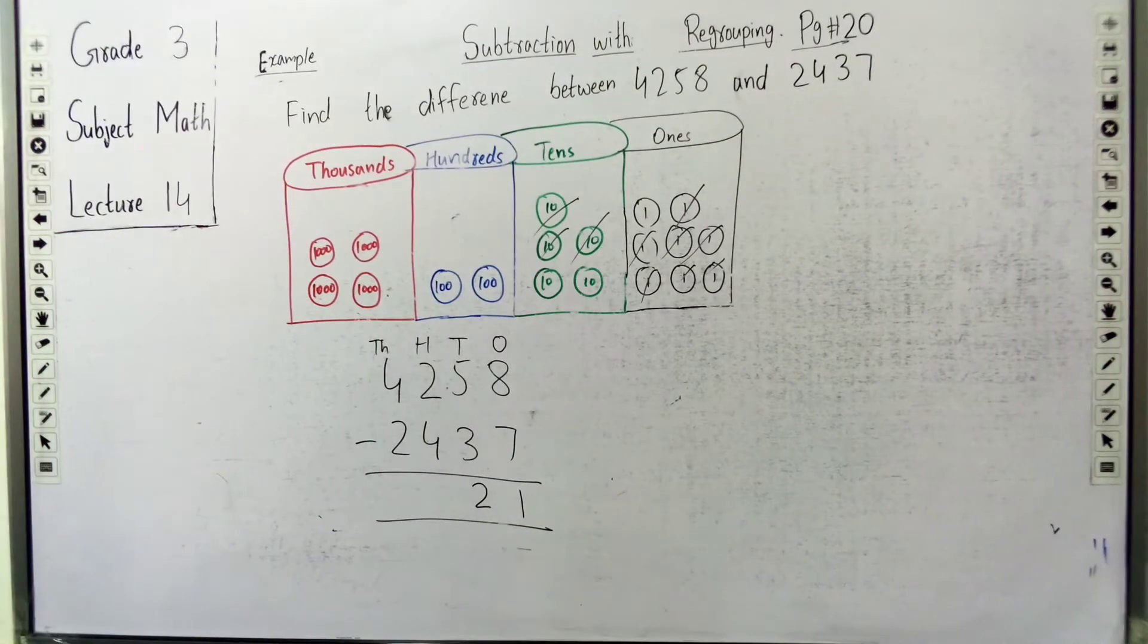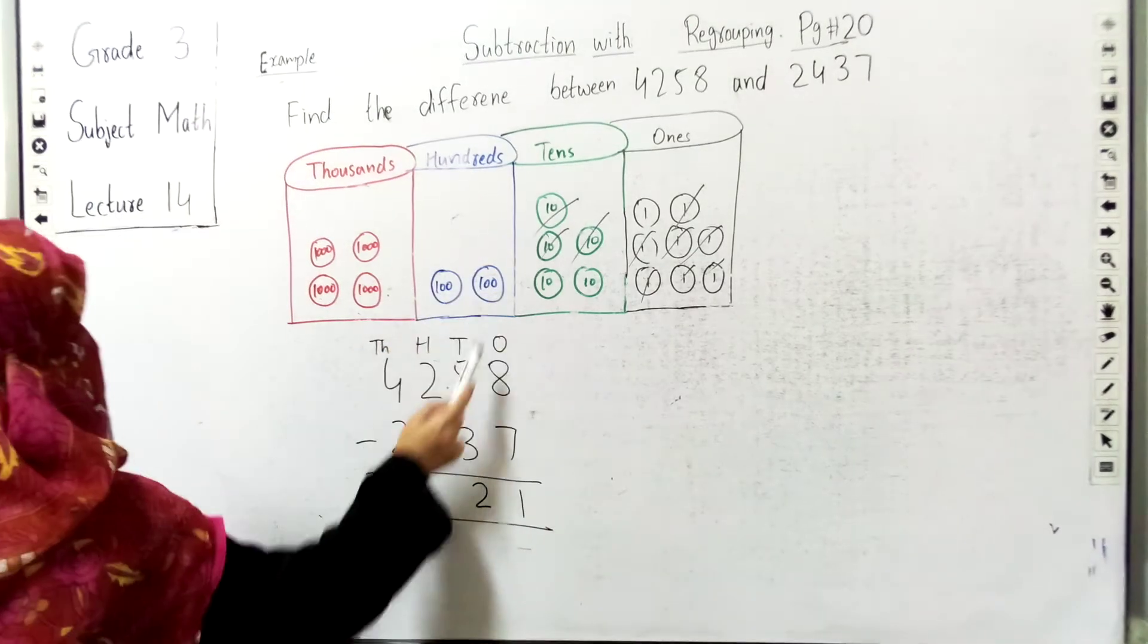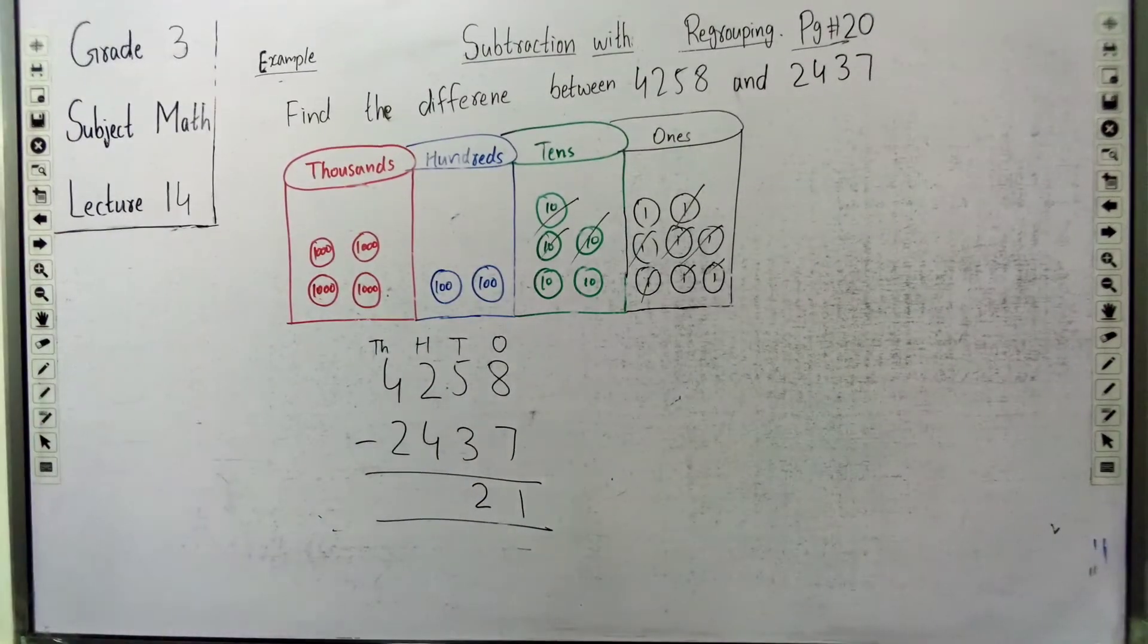Next we have 2 blocks of 100. So we have 2 blocks of 100, but we need 4 blocks of 100 to minus.